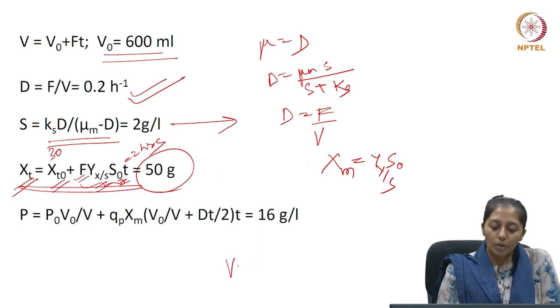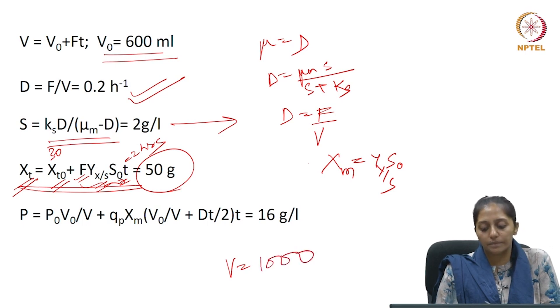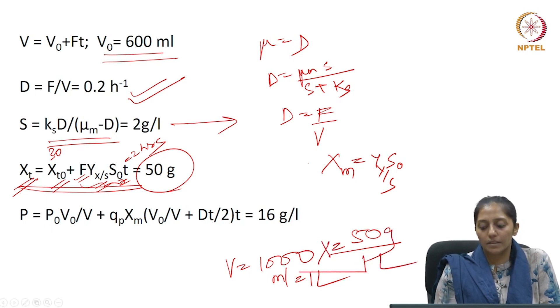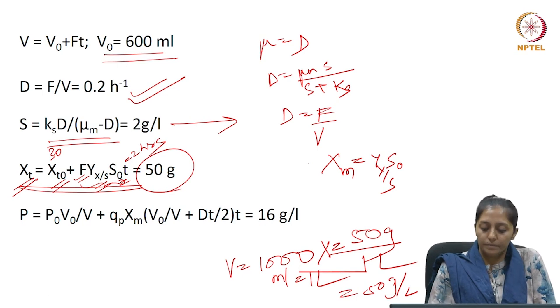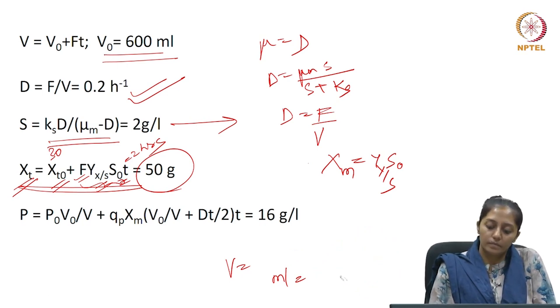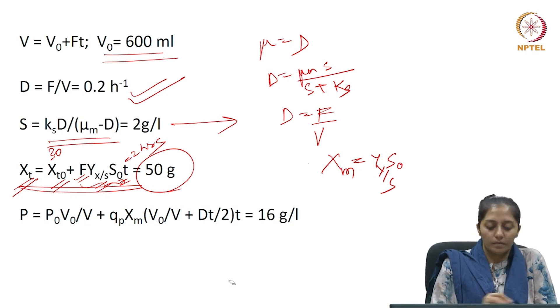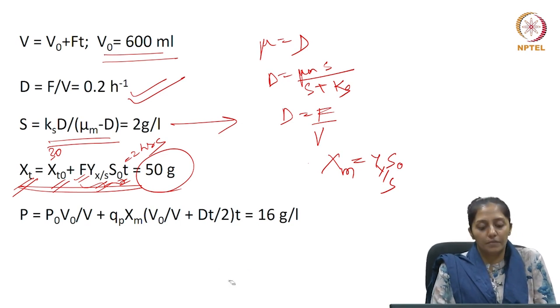So, if you remember, the volume at 2 hours was 1000, is it not, 1000 ml, which means 1 liter. So, your concentration of biomass is 50 grams per liter, which is the same as we had calculated earlier, and the amount of biomass is 50 grams.